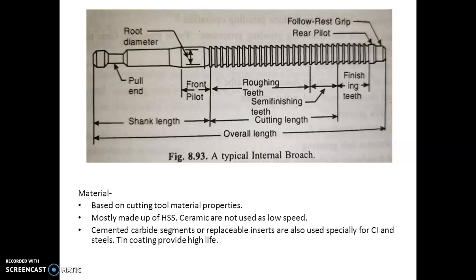The first set of teeth behind the front pilot removes most of the material and are called roughing teeth. These are the roughing teeth up to this range. These are followed by a few teeth called semi-finishing teeth. Here is the range for semi-finishing, where the depth of cut of the individual tooth is quite small.